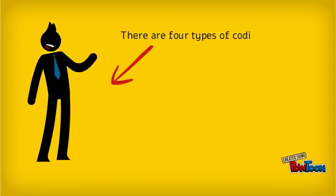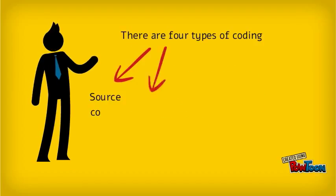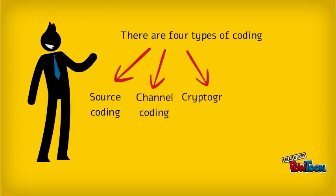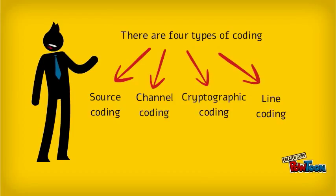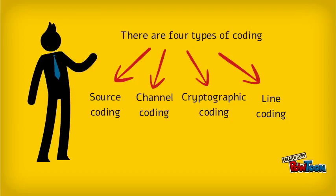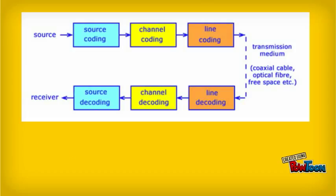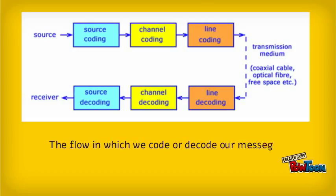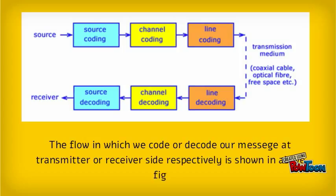There are four types of coding: source coding, channel coding, cryptographic coding, and line coding. The flow in which we code or decode our message at the transmitter or receiver site respectively is shown in the above figure.